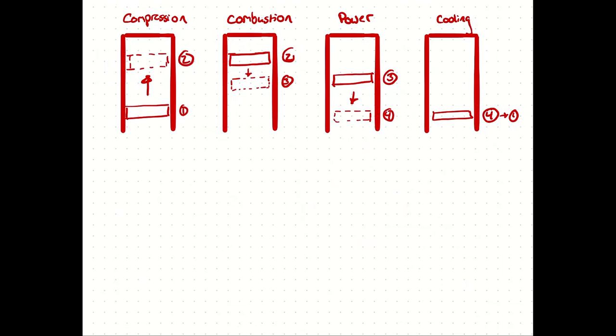So, compression, the piston moves up, compresses the air, and then we inject the fuel for a bit, between two and three, during which the fuel is burning. And then from three to four, we expand the rest of the way. Hopefully that's most of the length of the cylinder, but not always. And then from four to one, we have isochoric cooling, just like we did in the Otto cycle.